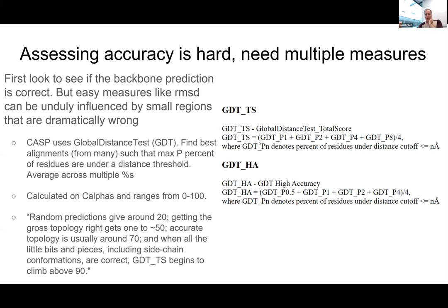There are lots of different ways of scoring a prediction. This is not trivial because you can produce a beautiful model for most of a protein, but if you've got a long loop profoundly wrong, then conventional measures like RMSD suddenly shoot through the roof. You might have six angstrom RMSD when in fact you've got most of the protein at 1.5 angstrom with just one loop at 20 angstroms — which is very unfair. You need a mechanism that recognizes you've got a large proportion of the model correct even if you've failed with a little bit.